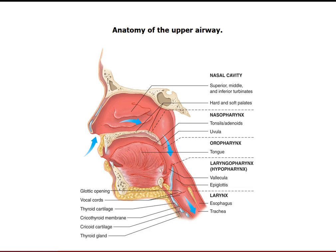Looking at the airway structures in your book, you'll see the nasal cavity, nasopharynx including the tonsils, adenoids, and uvula, the glottic opening and vocal cords at the larynx, thyroid cartilage, cricothyroid membrane where surgical crics are performed, the cricoid cartilage used in the BURP maneuver, and the thyroid gland which regulates calcium production.